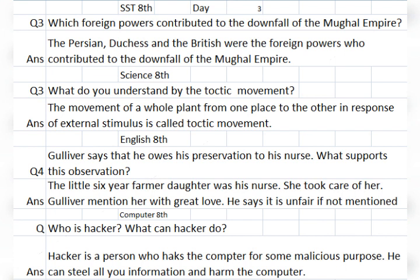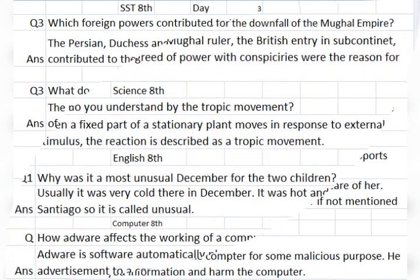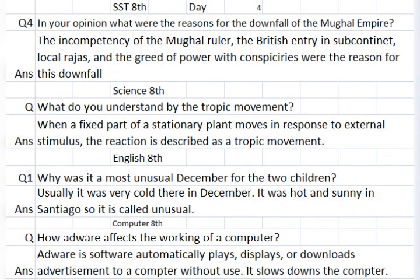English Class 8, Q4: Why was it the most unusual December for the two children? Usually it was very cold in December, but it was hot and sunny in Santiago, so it is called unusual.